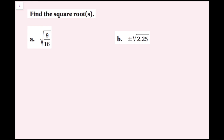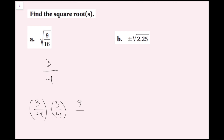For this example, we're going to find the square roots. For part a, I have the square root of a fraction. When taking the square root of a fraction, I can take the square root of the numerator and the square root of the denominator separately. The square root of 9 over 16 — the square root of 9 is 3, and the square root of 16 is 4, giving me 3 fourths. To check: 3 fourths squared is 9 over 16, which confirms the answer.